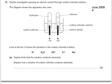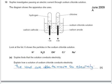Here's an exam question. Sophie investigates passing an electric current through sodium chloride solution. The diagram shows the apparatus she uses. Look at the list — it shows the particles in the sodium chloride solution. Sophie finds that the solution conducts electricity. The ions are able to move, so electrolysis can occur, and it's the electrolysis that allows the electricity to pass through the solution.